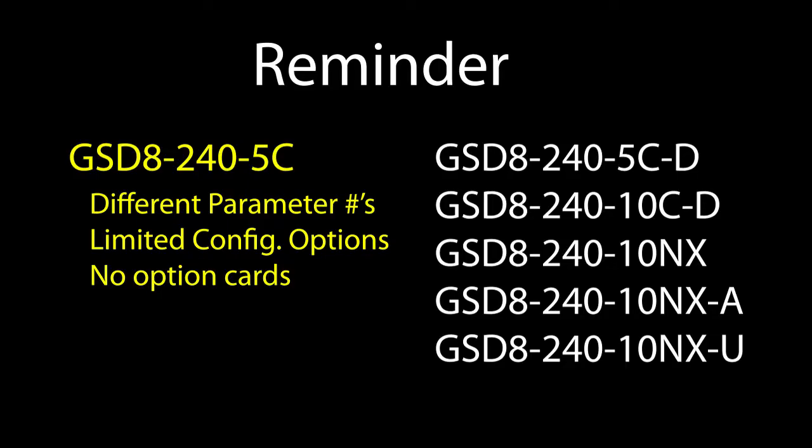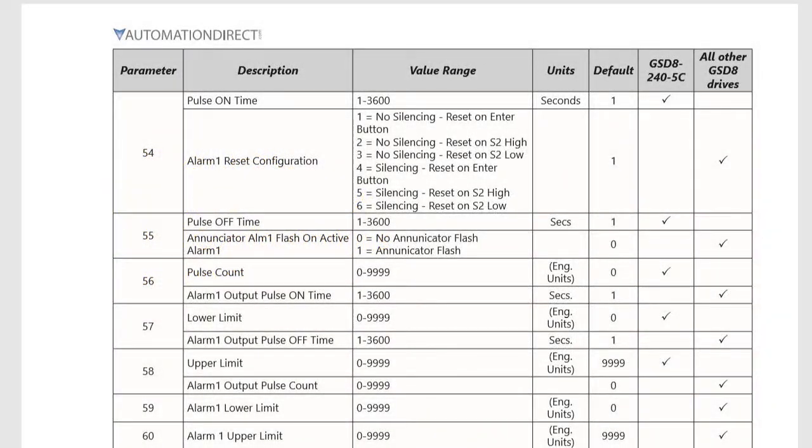Just remember that the GSD-8245C, the low end drive, uses different parameter numbers and doesn't support all these options. You can see in the user manual there is a column that tells you which parameters apply to that guy and which parameters apply to all the other drives.